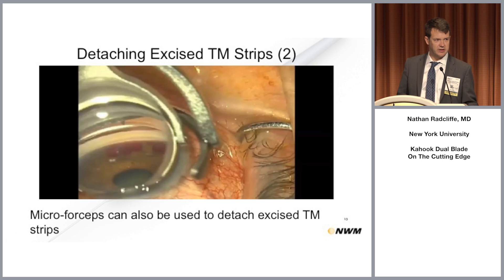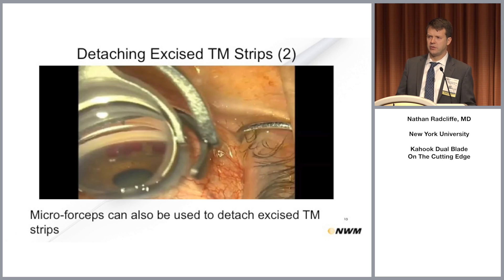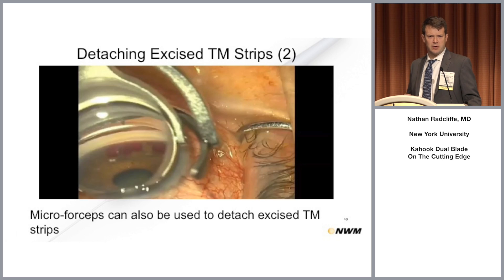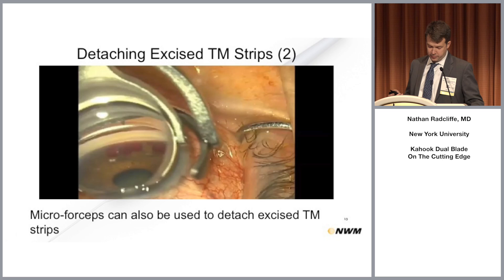If you see the strip dangling — say you've done the surgery and during I&A you see it dangling — make an effort to get it out. Irrigation-aspiration does not do a good job removing a strip that's still firmly attached. You could take the Kahook Dual Blade and go back and sweep more, or use micro forceps or micro scissors to cut it out. It won't be a visual problem for the patient, but we want to remove it so it doesn't heal back in. Conceptually, the dual blade is designed differently from a goniotomy incision that can heal — if you remove the strip, it can't heal, and that's why we're hoping for long-term pressure reduction.